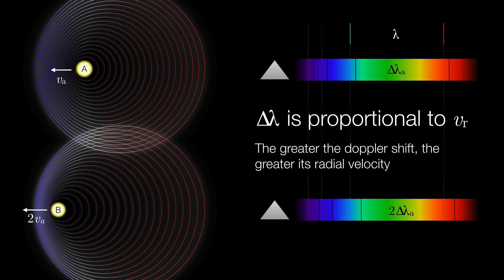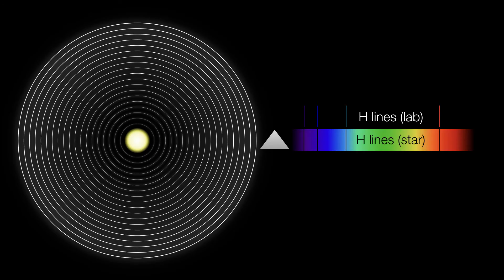So we can relate the radial velocity to the Doppler shift and to the rest wavelength like this. It's simply the Doppler shift divided by the rest wavelength multiplied by the speed of light. So let's run through a quick example here.